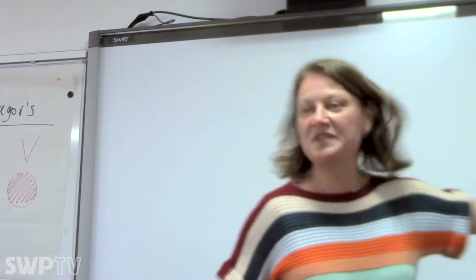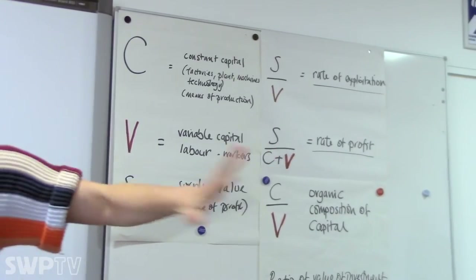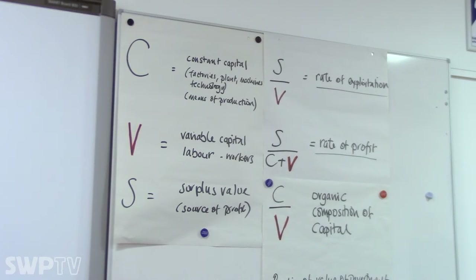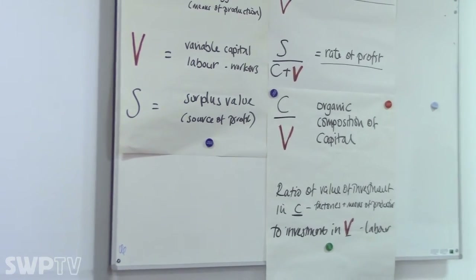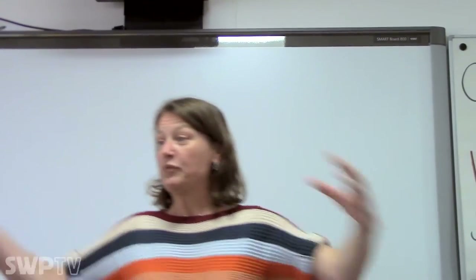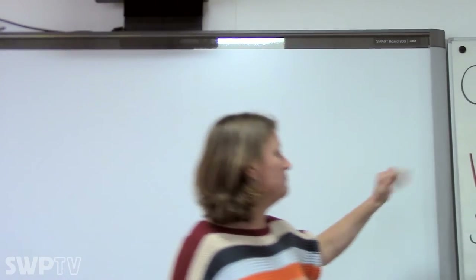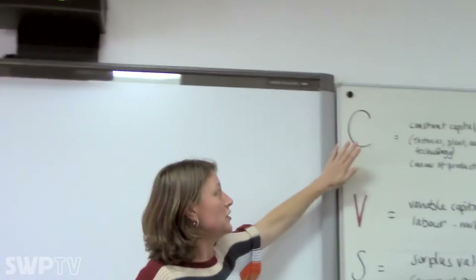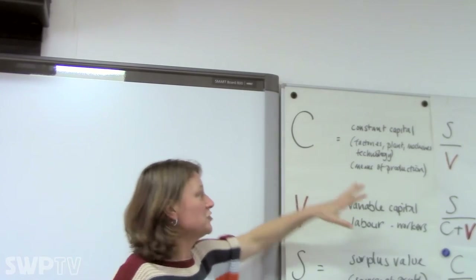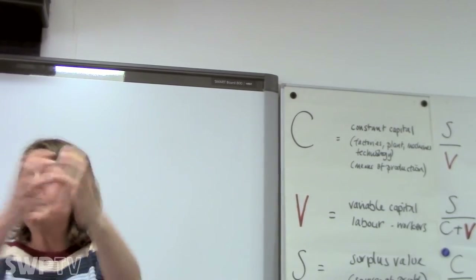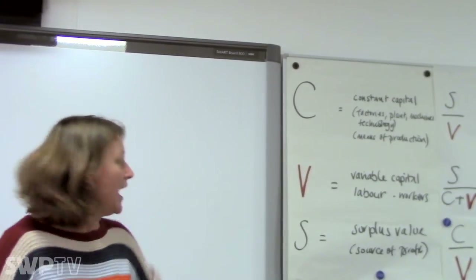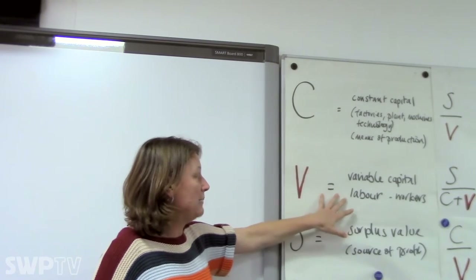I have got some stuff written up here which I'm hoping will make some sense to people, because what we've been talking about so far in terms of looking at exploitation and accumulation is around the fact that we have a system of commodity production under capitalism. When we look at the processes and ingredients of commodity production, we've basically got constant capital — factory, plant, machines, technology, raw materials — all of those different factors, the means of production owned by the capitalists.